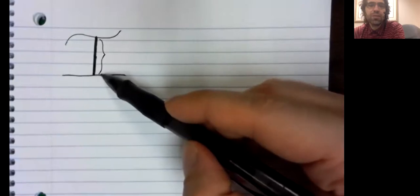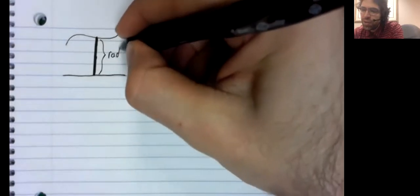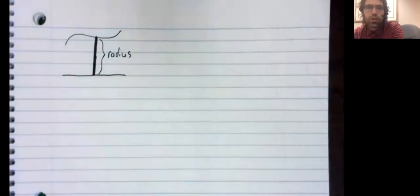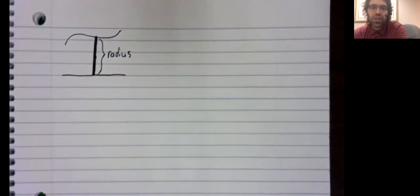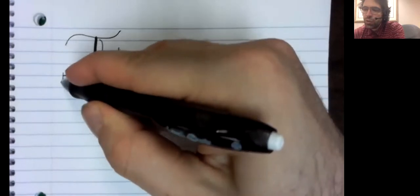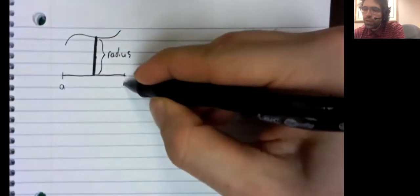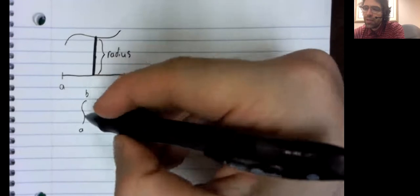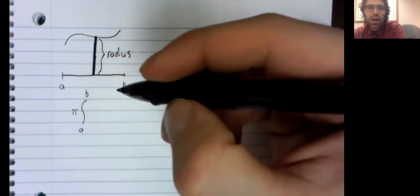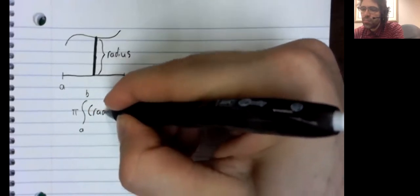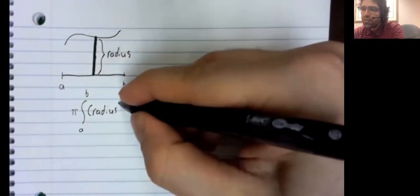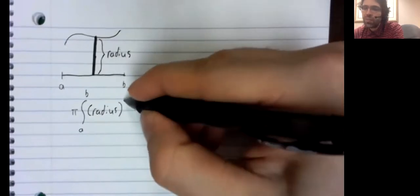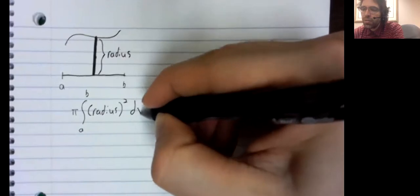And the distance between the axis of revolution and the curve became the radius of a cylinder. And our integral ended up being the integral from a to b with a pi out front of a radius, this radius squared, dx.